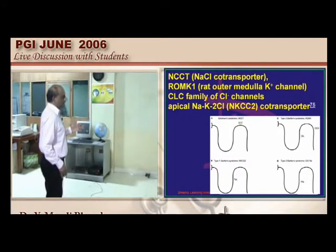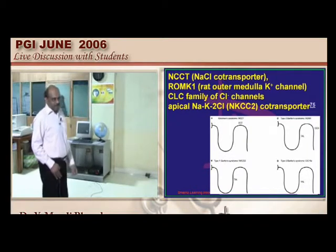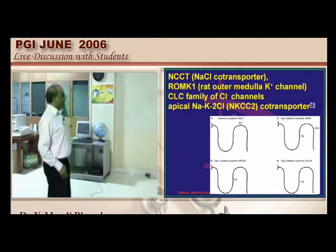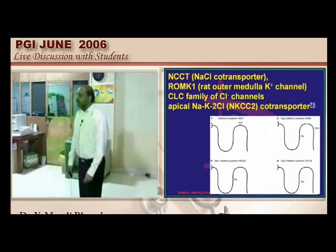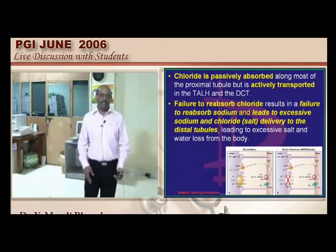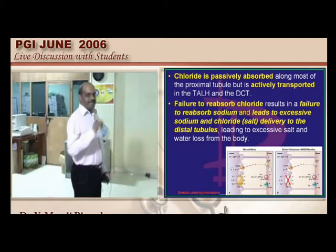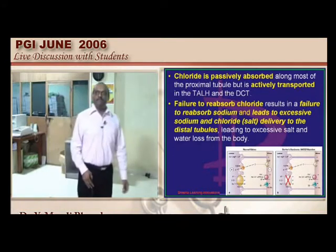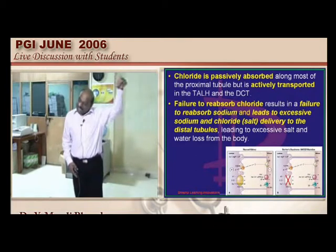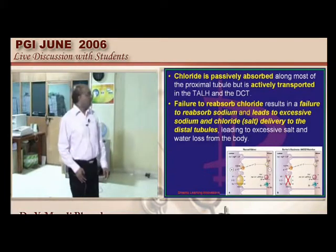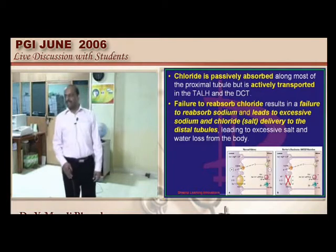Bartter type 3 involves another receptor at the thick ascending limb. Summary: Bartter = problem at thick ascending limb of loop of Henle; Gitelman = problem at distal convoluted tubule. In both cases, the problem is sodium-chloride reabsorption failure. Chloride is passively reabsorbed at the proximal tubule and actively at the thick ascending limb and distal convoluted tubule.